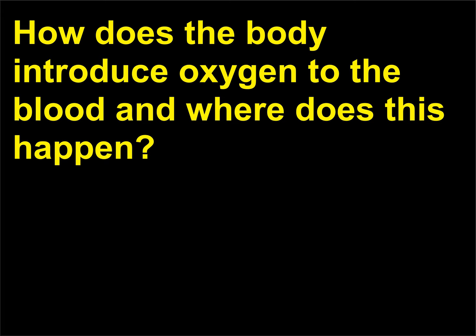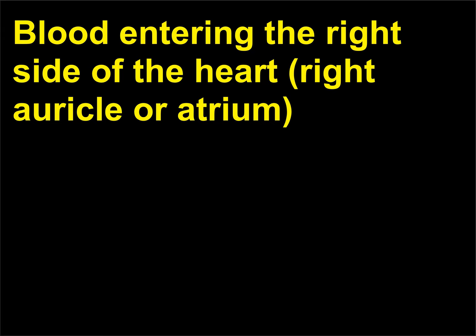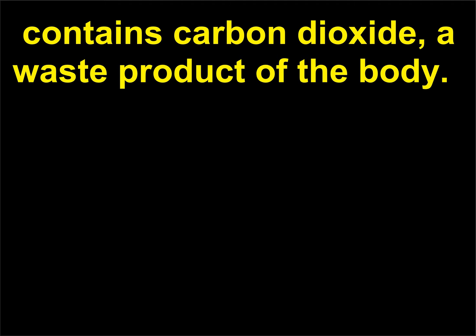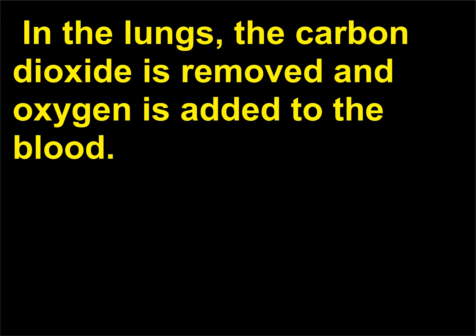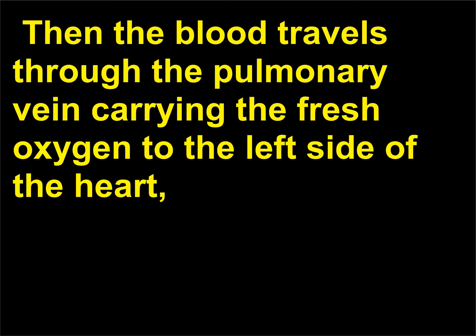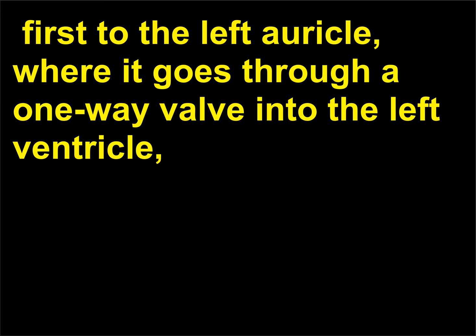How does the body introduce oxygen to the blood and where does this happen? Blood entering the right side of the heart, right auricle or atrium, contains carbon dioxide, a waste product of the body. The blood travels to the right ventricle, which pushes it through the pulmonary artery to the lungs. In the lungs, the carbon dioxide is removed and oxygen is added to the blood. Then the blood travels through the pulmonary vein carrying the fresh oxygen to the left side of the heart.